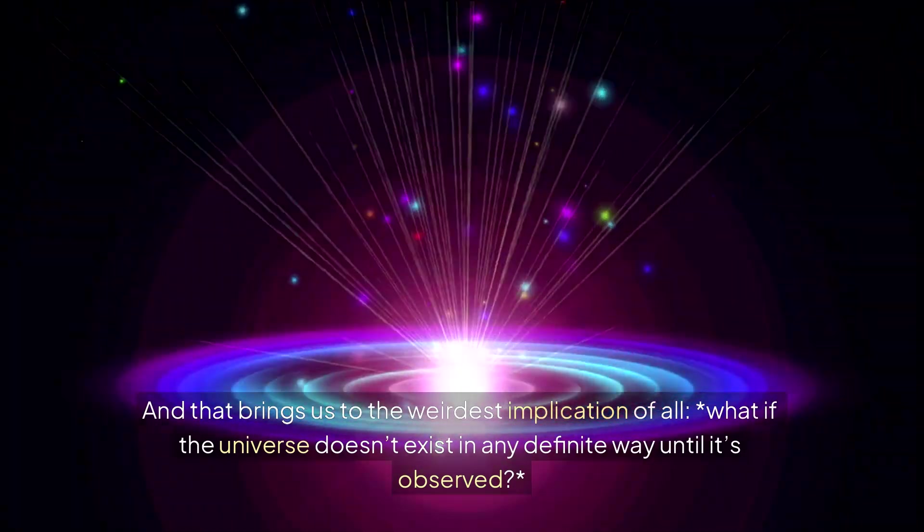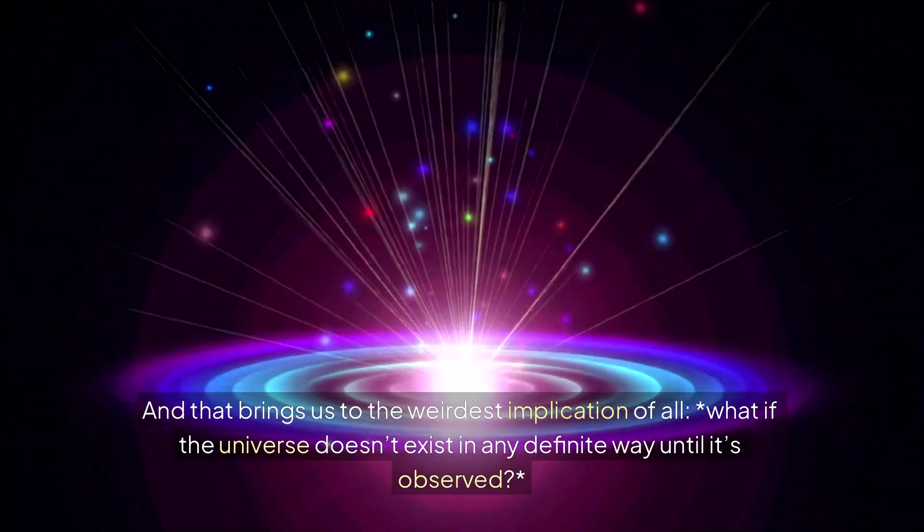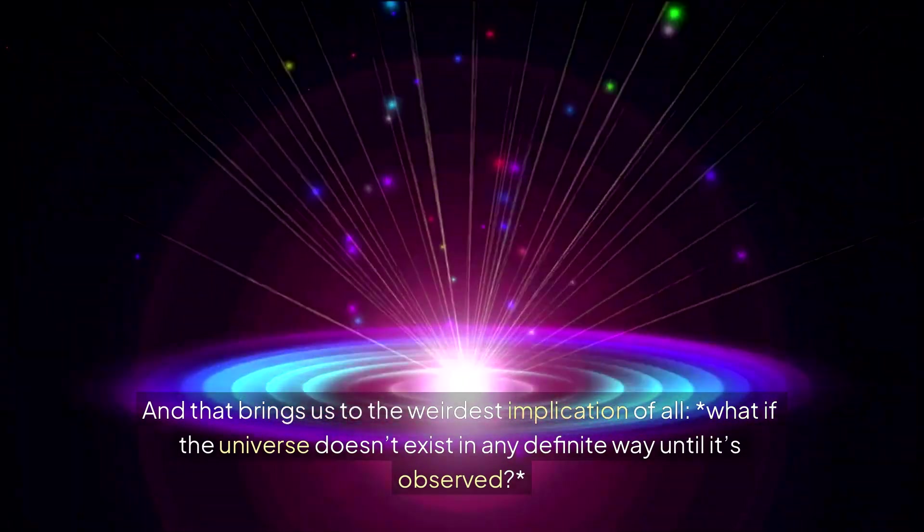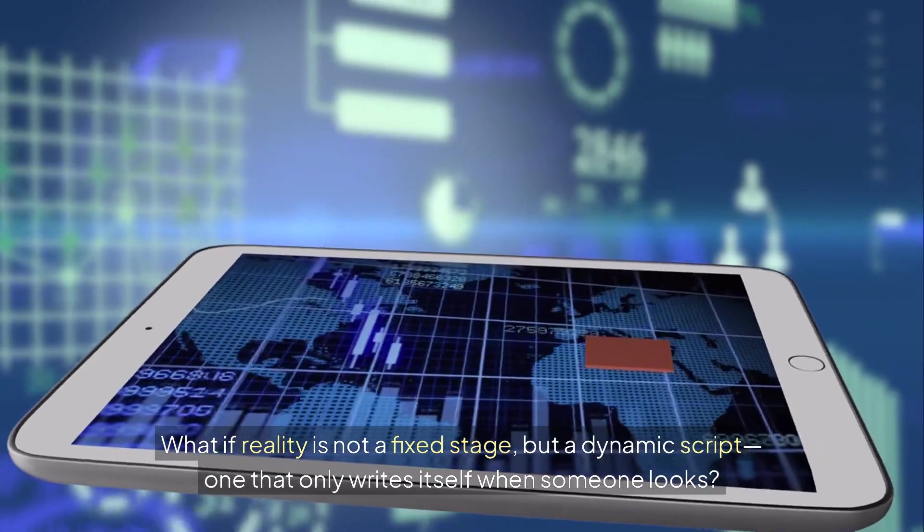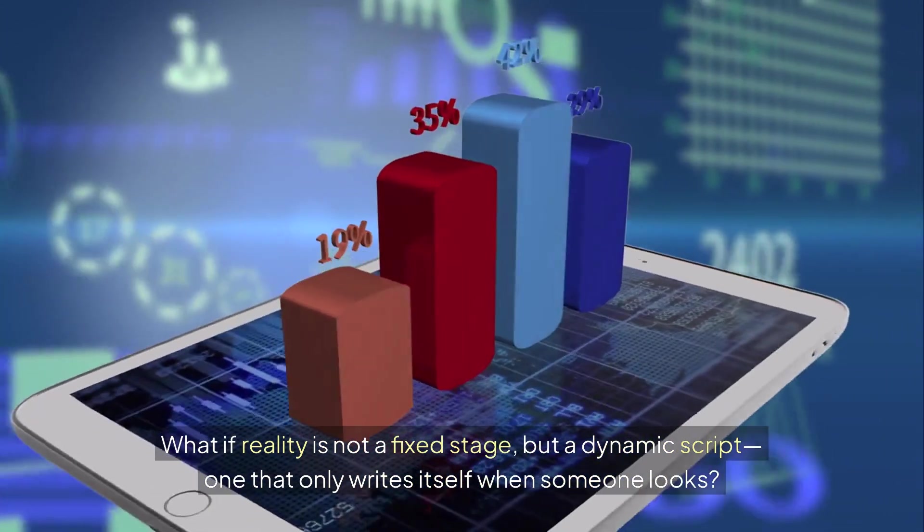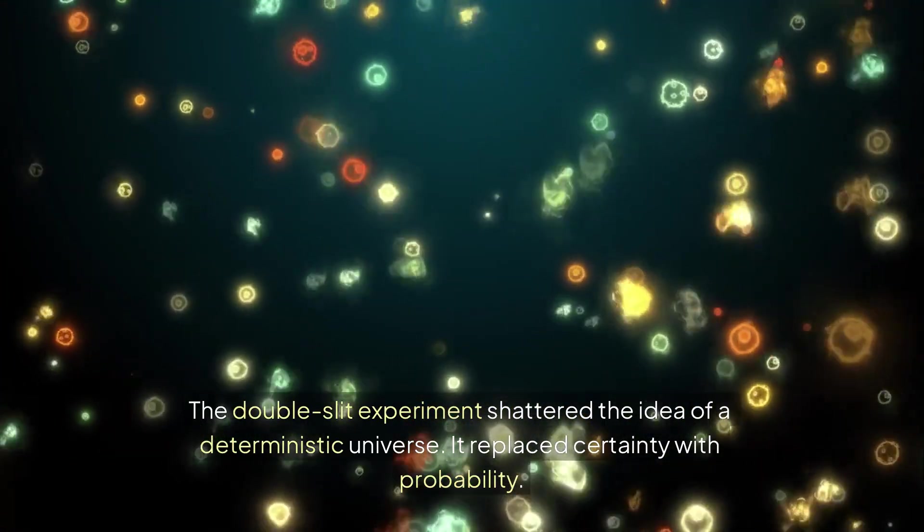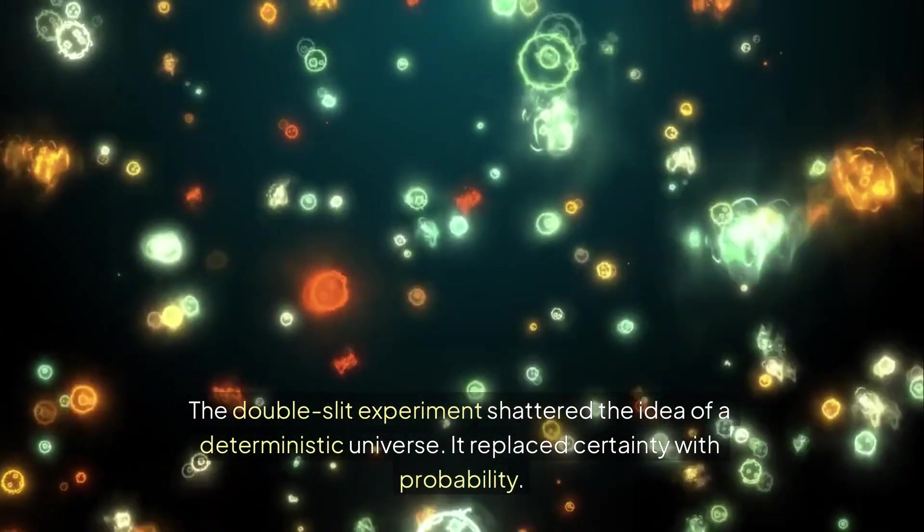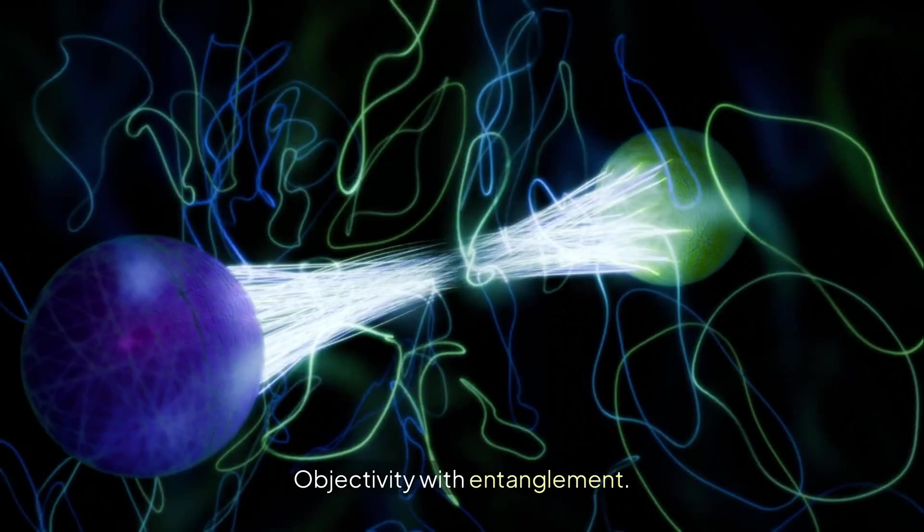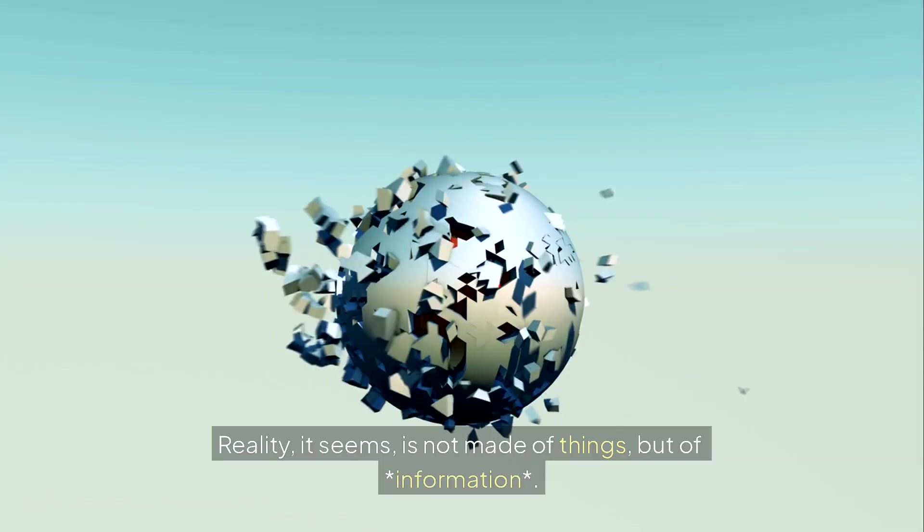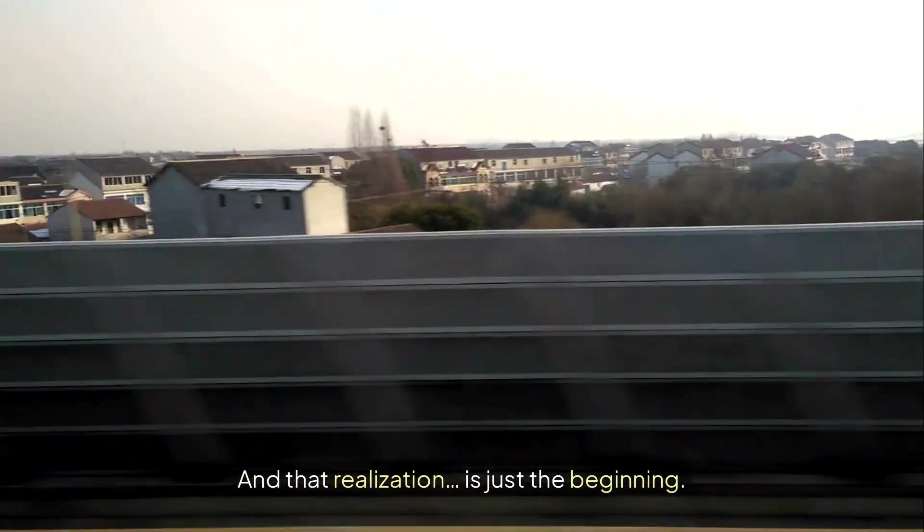And that brings us to the weirdest implication of all. What if the universe doesn't exist in any definite way until it's observed? What if reality is not a fixed stage, but a dynamic script, one that only writes itself when someone looks? The double-slit experiment shattered the idea of a deterministic universe. It replaced certainty with probability, objectivity with entanglement. Reality, it seems, is not made of things, but of information, possibility, context. And that realization is just the beginning.